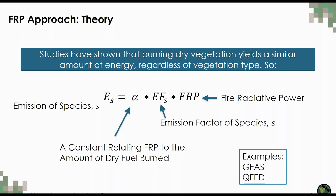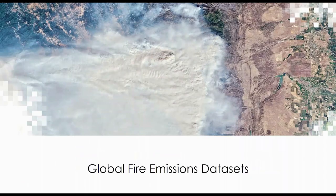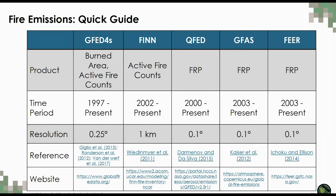Examples of emissions inventories that use the FRP method are QFED and GFAS. Other fire emissions inventories, such as the NASA FEAR inventory, relate FRP directly to the emission of a given species through the derivation of emission coefficients. Now we'll review a few commonly used fire emissions inventories. I've included a quick reference table showing the four fire emissions inventories I'll describe today, along with the FEAR inventory. The satellite product, time period, spatial resolution, references, and websites are all listed in this table.